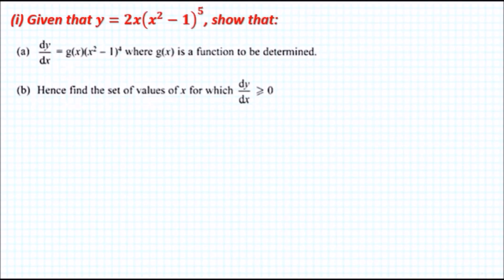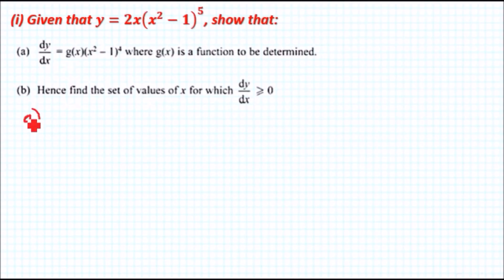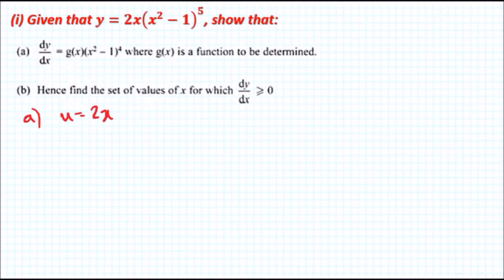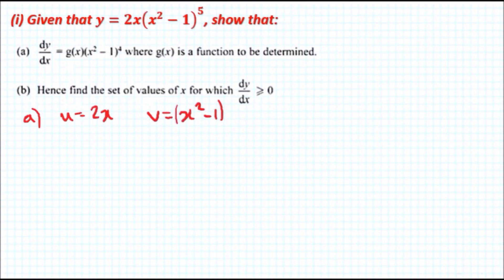This is just a simple case of differentiating, so not too bad. We need to do this using the product rule. So by the method of the product rule, we have to label some terms. We can call firstly 2x as u, and we can call v the second term, which is (x² - 1) to the power of 5.